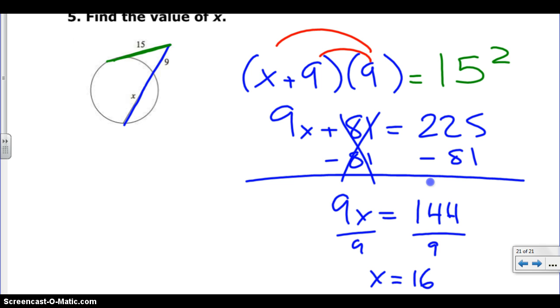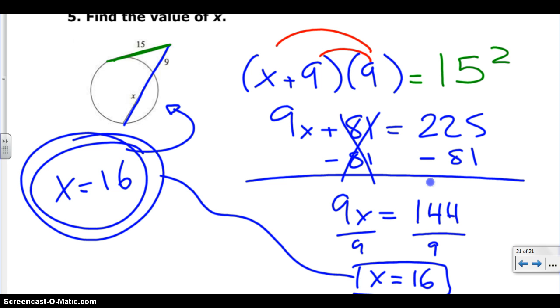Right? 9, 2, 1, 9, 5, 54, 6. Perfect. So X is 16. And once again, if they asked you to find the length of the whole secant, you would plug in the 16 for X, and you'd get 16 plus 9 is 25. And that's how you work with secants and tangents.